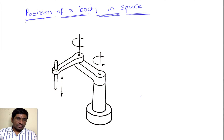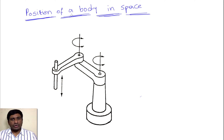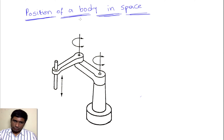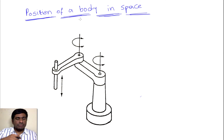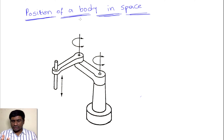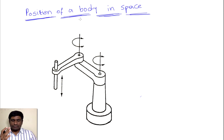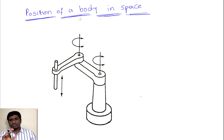Our next important topic is knowing how to calculate the position of a body in space — how to calculate the position of a body if it is moving or if it is having a translation motion, and in the other case we need to find out the position of the same body when it has reached that position using certain types of rotations.